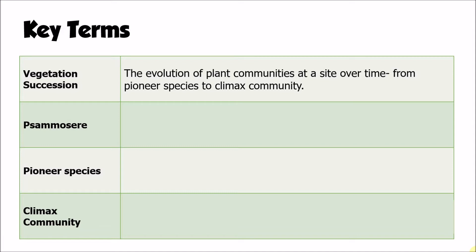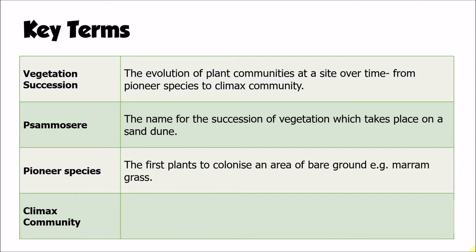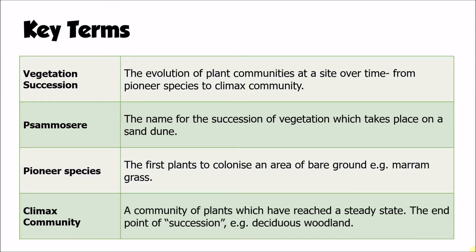The word psammosere represents the name for the succession of vegetation which takes place specifically on sand dunes. Pioneer species are the first plants to colonize an area of bare ground — in the case of sand dunes, a good example might be marram grass, the grass which first colonizes that bare sand. And the climax community is the end point of succession: a community of plants which has reached a steady state over time, and in the UK that would normally be deciduous woodland.